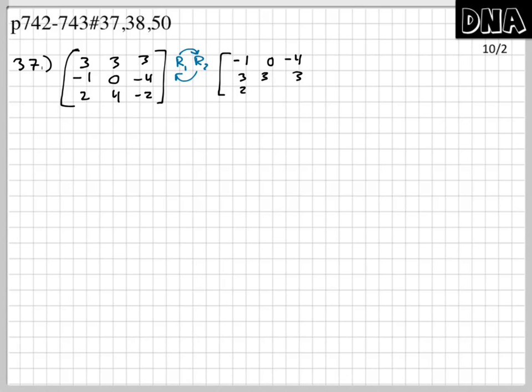Make sure you're copying all the numbers correctly, because it's frustrating to miss a negative sign and only realize it after you've done a bunch of operations. Now, I'll multiply row 1 by negative 1 so the leading entry becomes a positive 1. That gives us positive 1, 0, positive 4.